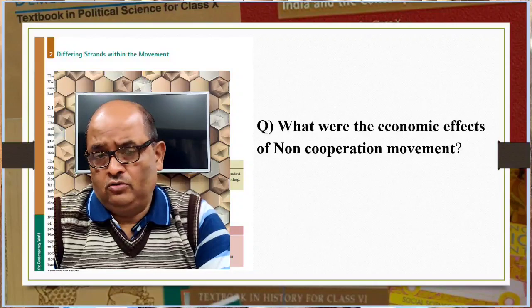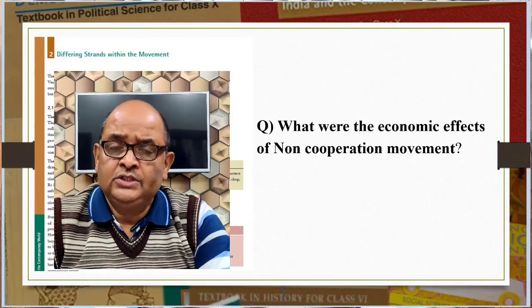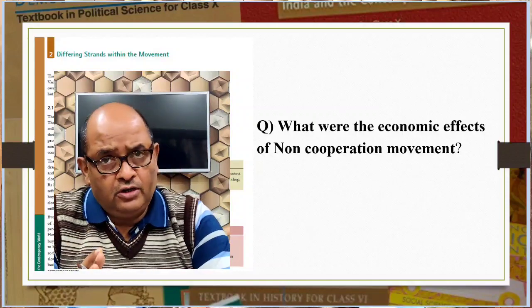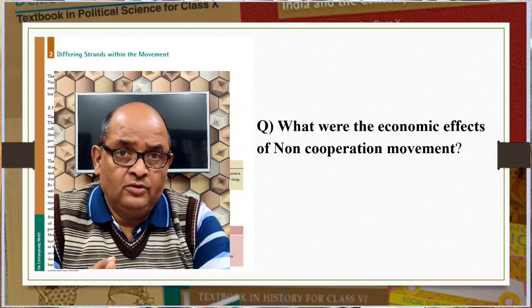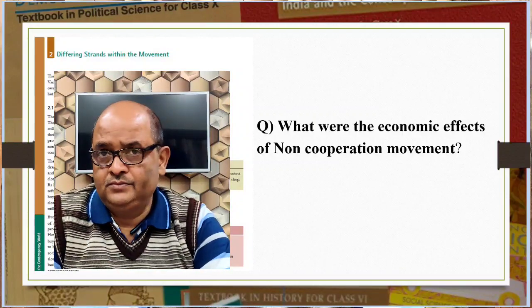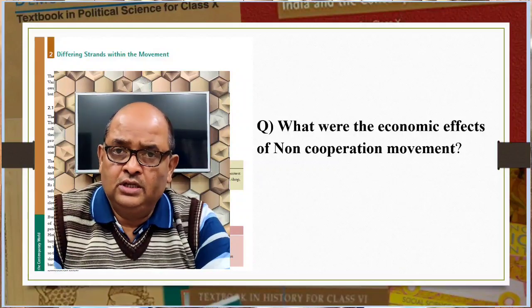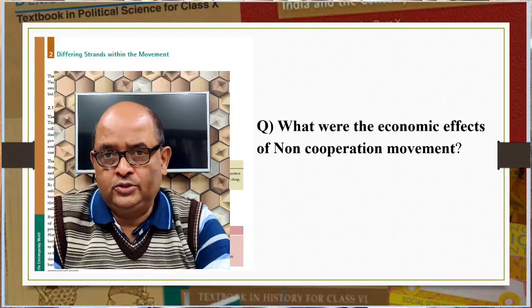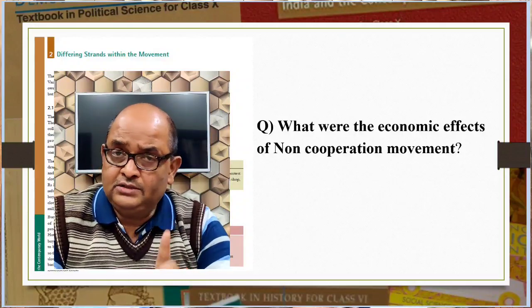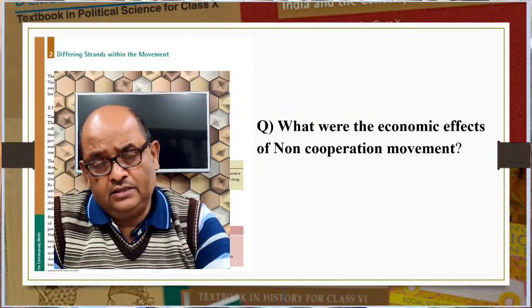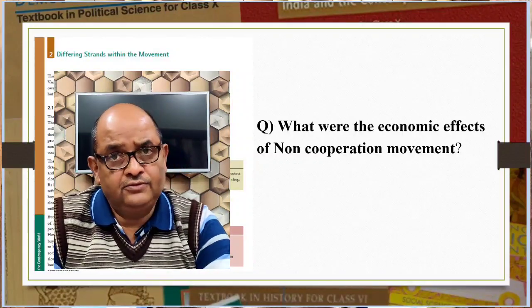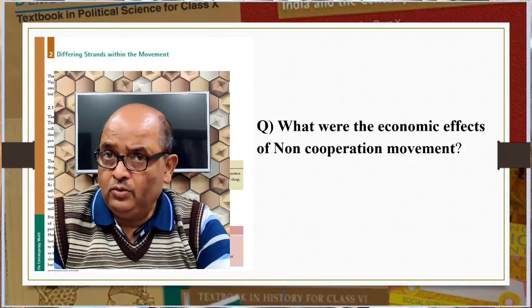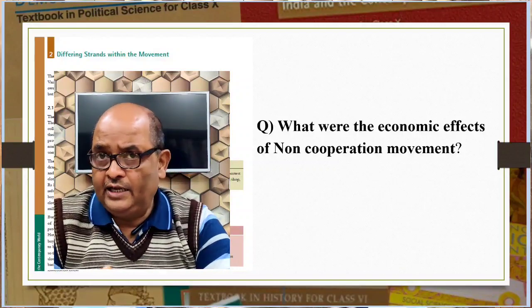What were the economic effects of the non-cooperation movement? The effects on the economic front are as follows. Foreign goods were boycotted, liquor shops were picketed, and foreign clothes were burnt in huge bonfires. The import of foreign clothes halved between 1921 and 1922, with its value dropping from Rs. 102 crores to Rs. 57 crores. In many places, merchants and traders refused to trade in foreign goods or finance foreign trade. As the boycott movement spread and people began discarding imported clothes and wearing only Indian ones, production of Indian textile mills and handlooms went up.